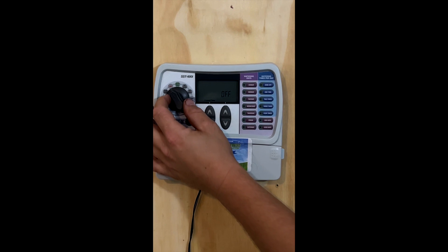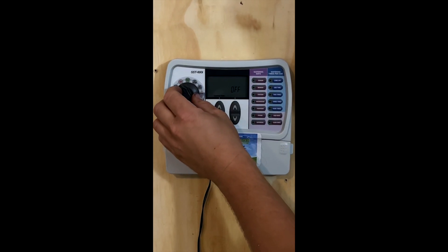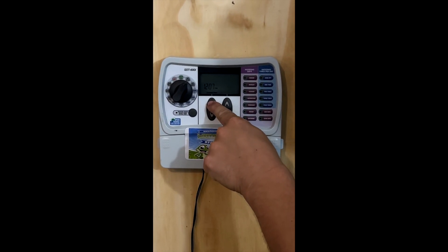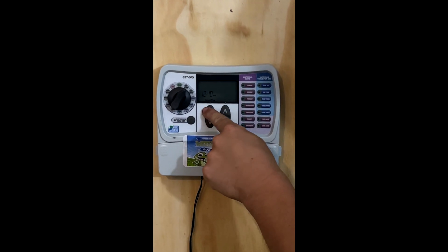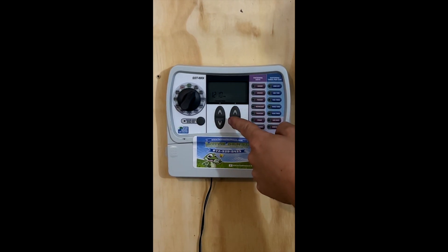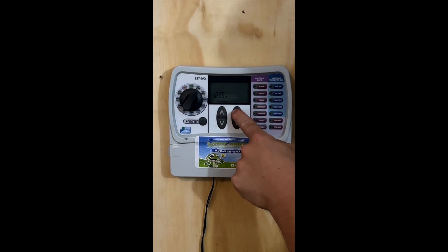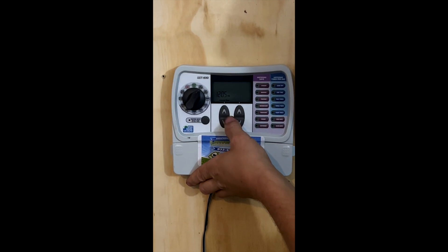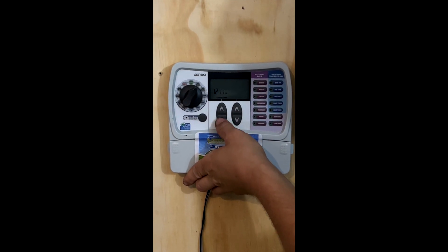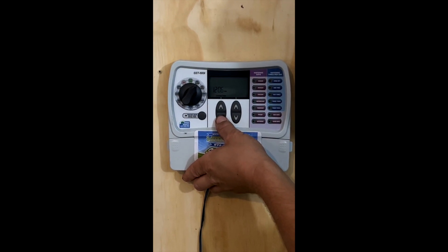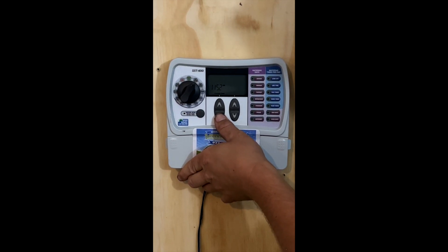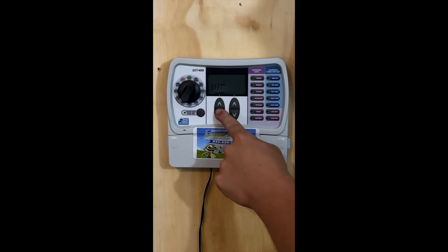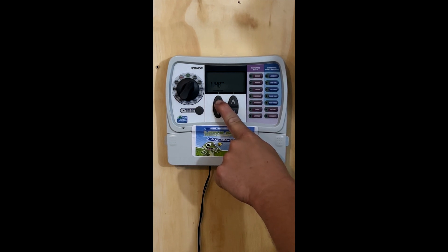The first thing we're going to do is go over to set clock, so that's always the first thing that I have people do. This up and down area will change the variable that is flashing. And if you hold down one of the arrows, you can move through the entire clock just by using either one of the arrows.